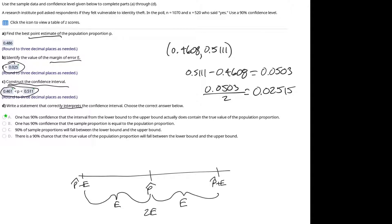In this case, that would be the population proportion. So the correct answer would be A. One has 90% confidence that the interval from the lower bound to the upper bound actually does contain the true value of the population proportion.